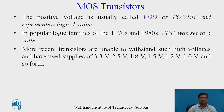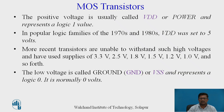The positive voltage is usually called VDD or power, representing logic 1. In the 1970s and 1980s, VDD was set to 5 volts. Nowadays VDD is decreasing, with supplies of 3.3 V, 2.5 V, 1.8 V, 1.5 V, 1.2 V, 1.0 V, and so forth. The low voltage is called ground, generally referred to as VSS, and it represents logic 0, normally 0 volts.